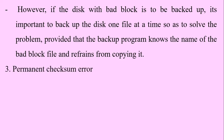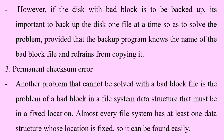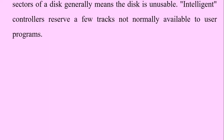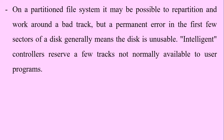Number three are the errors called permanent checksum errors. Another problem that cannot be solved with a bad block file is a bad block in a file system data structure that must be in a fixed location. Almost every file system has at least one data structure whose location is fixed so that it can be found easily. On a partitioned file system, it may be possible to repartition and work around a bad track, but a permanent error in the first few sectors of a disk generally means the disk is unusable.